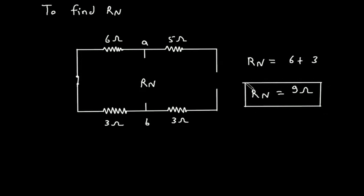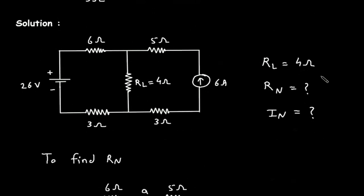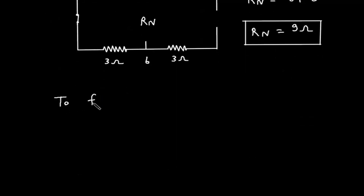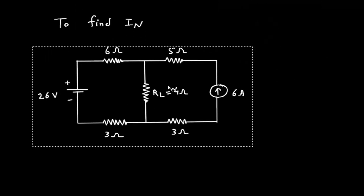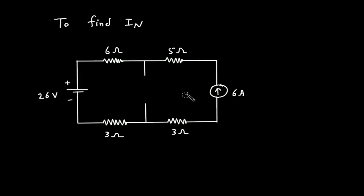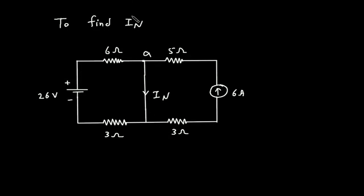Then next we have to find In. To find In, we have to short circuit this RL, so this will be short circuited and this current will be In. Now we have to find this In. Let's say this is terminal A and this is terminal B, and this is ground. We are using nodal analysis here, or we can use superposition theorem — so here we will use superposition theorem.